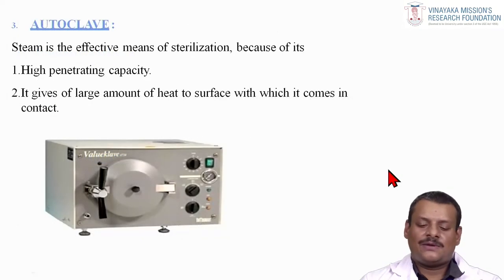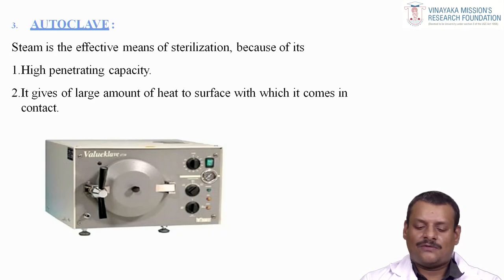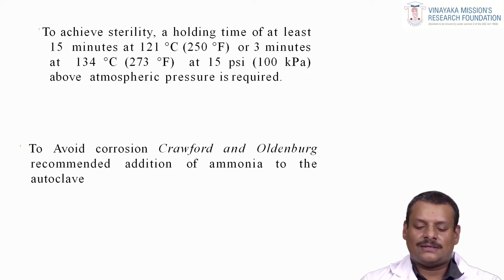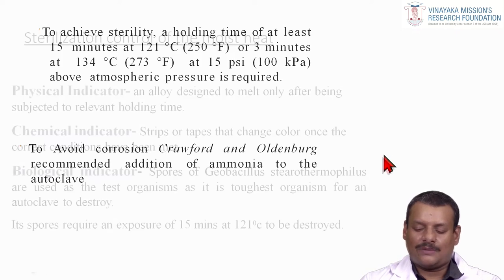The autoclave uses steam, which is an effective means of sterilization due to its high penetrating capacity and the large amount of heat it gives off to surfaces it contacts. To achieve sterility, a holding time of at least 15 minutes at 121°C or 3 minutes at 134°C at 15 PSI pressure is required. To avoid corrosion, Crawford and Oldenburg recommended the addition of ammonia to the autoclave.